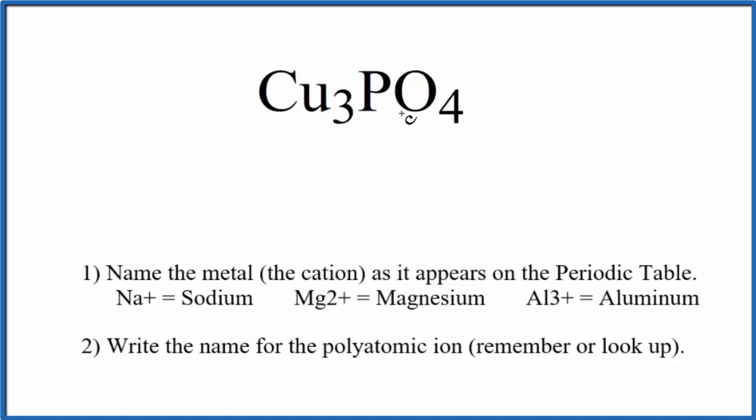So we have the phosphate ion bonded to copper, three copper atoms. Copper is a transition metal, so we have a transition metal, a metal here, and a non-metal or group of non-metals in the polyatomic ion.